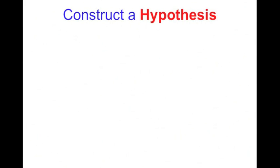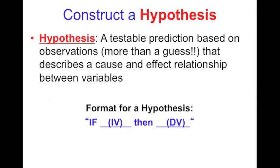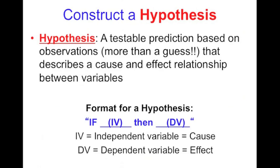From there you're going to be able to construct a hypothesis. You are in high school now, so we are not going to call hypotheses educated guesses. We have a much more correct definition for a hypothesis. A hypothesis is a testable prediction based on observations. It's more than just a guess, and it describes a cause and effect relationship between variables. The format for a hypothesis is if the independent variable happens, then we think the dependent variable is going to happen. You don't always have to use this format, but it's a really good format to make sure you're setting it up correctly. IV stands for independent variable and that's the cause. DV is going to be the dependent variable or the effect.